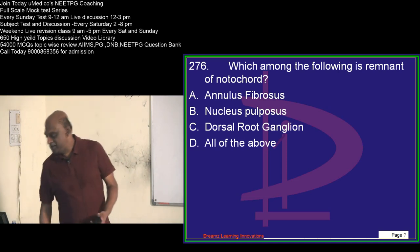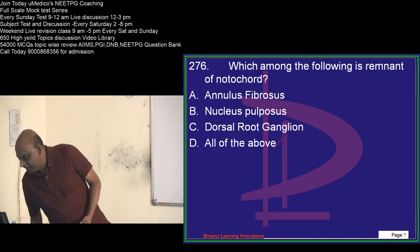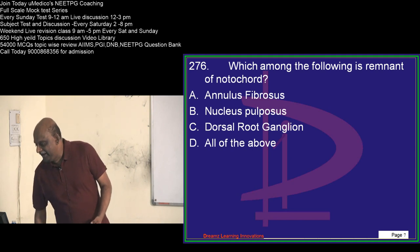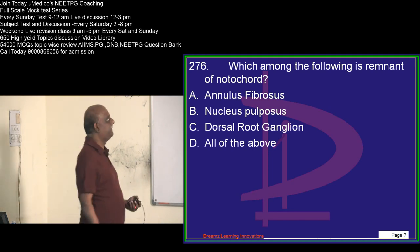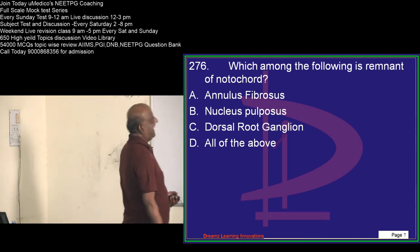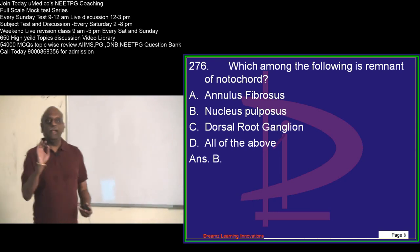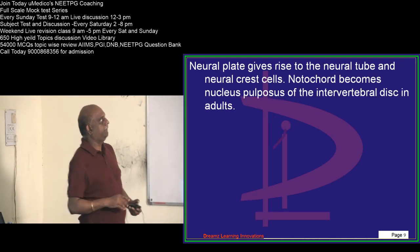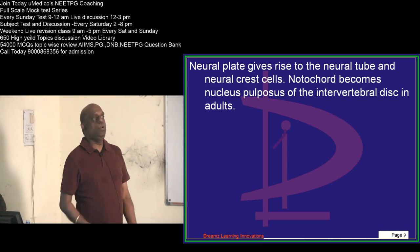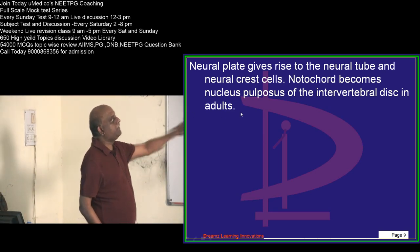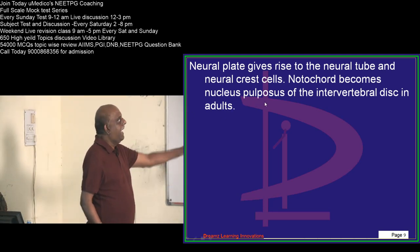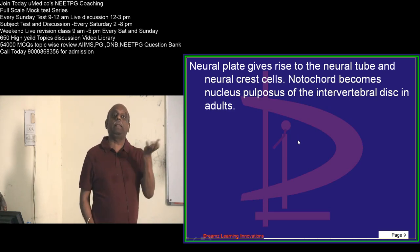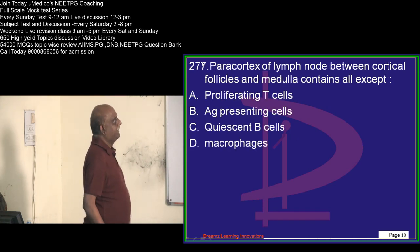Now the next question — most of you are differing between B and D. Nucleus pulposus is considered to be the remnant of the notochord. The neural plate gives rise to the neural tube and neural crest cells, and the notochord becomes the nucleus pulposus — that is what you have to ultimately remember.